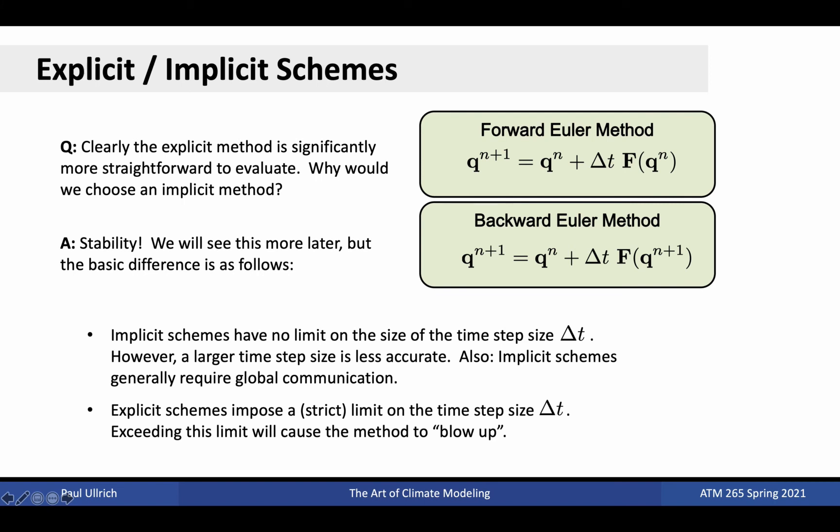Well, in practice, operational models do almost exclusively use explicit methods. That being said, implicit methods are useful because of their linear stability properties. As we'll see later, implicit methods generally have no limit on the time step size permitted by the model, while explicit methods are constrained in their time step size by a condition known as the CFL condition, which requires that the time step be bounded by a small multiple of dx over u, where u is the maximum wave speed from the problem. For the atmospheric fluid equations, that wave speed is the speed of sound.